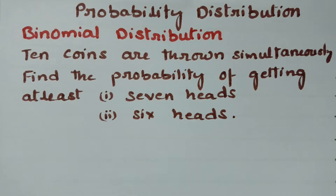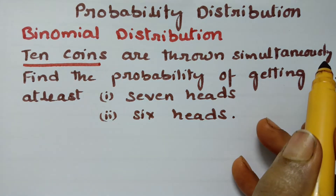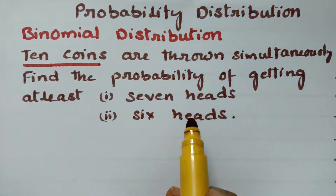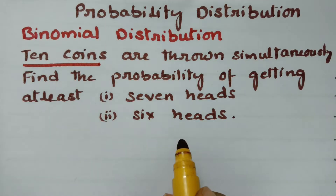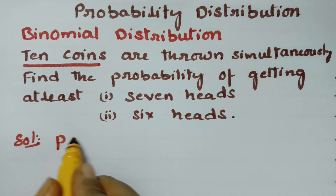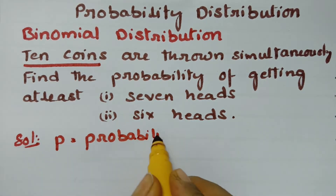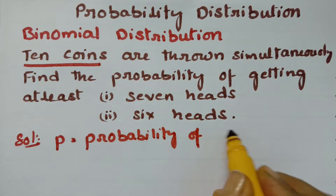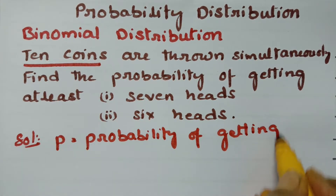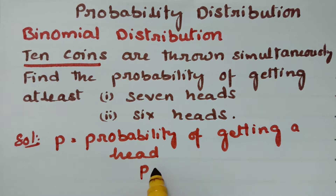Today's video is on binomial distribution, from the topic of probability distribution. The question here is: 10 coins are thrown simultaneously. Find the probability of getting at least 7 heads, and next, at least 6 heads. P is equal to the probability of getting a head, which is half. So P is equal to half.